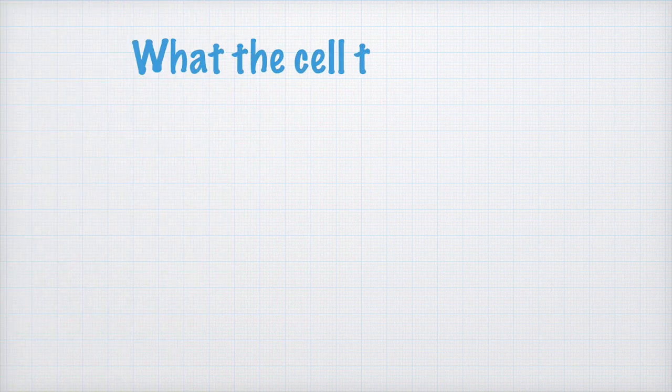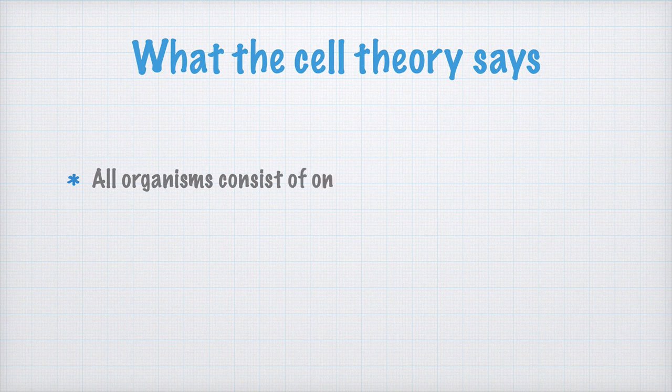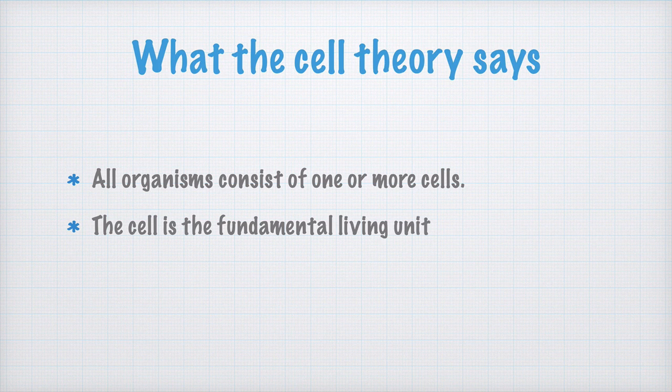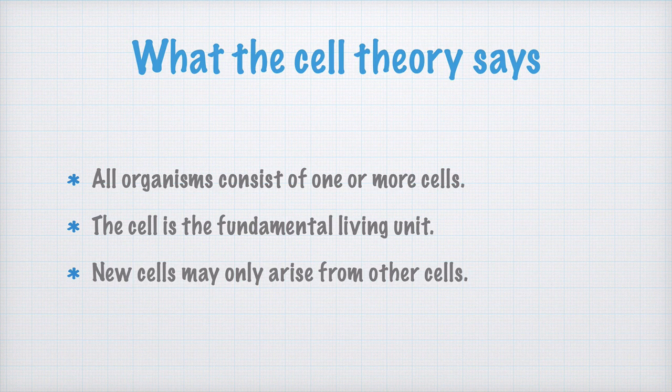So what about this cell theory? What does it say? Well, the cell theory describes what an organism is and how it relates to cells. It says that all organisms consist of one or more cells. The cell is considered the fundamental living unit and cells make up all living organisms. Also, new cells can only arise from other cells. This means that essentially you need cells to build an organism.